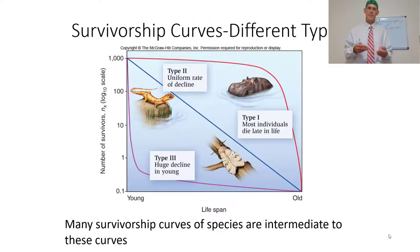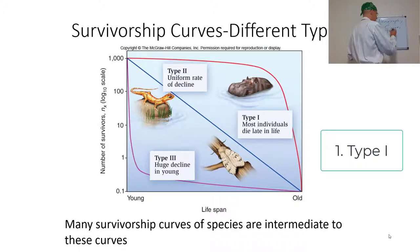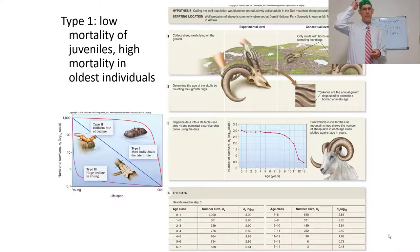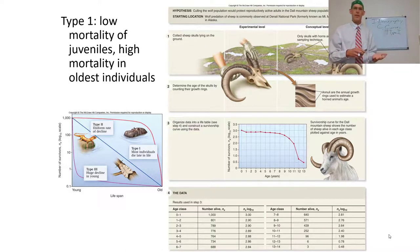There are different types of curves for different organisms. Type 1 survivorship curves are characterized by low mortality of juveniles and high mortality in the oldest individuals. Good care of offspring leads to most individuals dying much later in life.